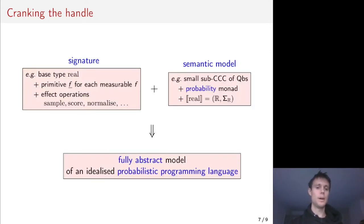Alternatively, one might take a language with a base type of real numbers, together with the classic operations used in probabilistic programming, and then take as a semantic model the category of quasi-Borel spaces and its probability monad, which is a really nice semantic model for reasoning about probabilistic programming. Our construction will then yield a fully abstract model of an idealized probabilistic programming language.